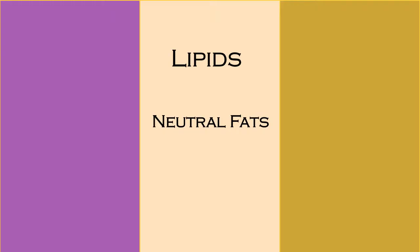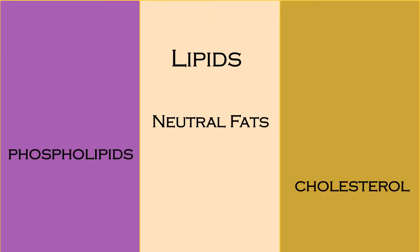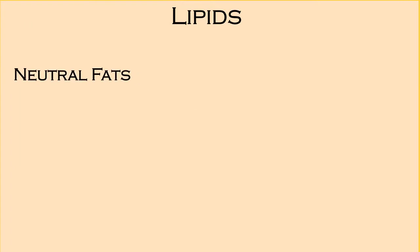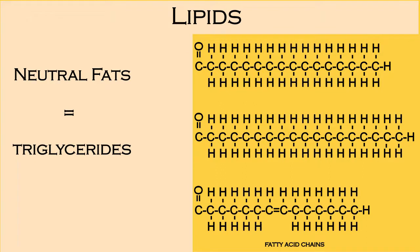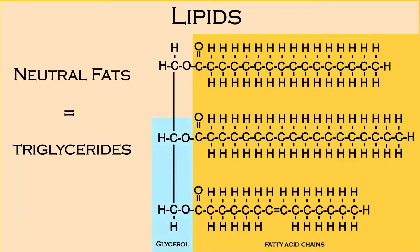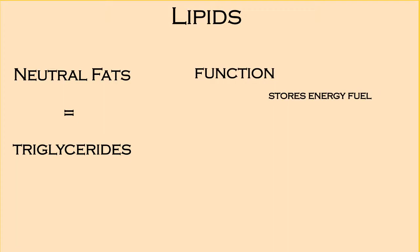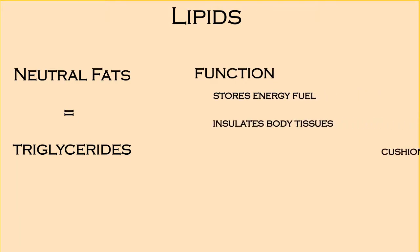Let's examine three types of lipids: neutral fats, phospholipids, and cholesterol. Neutral fats, also called triglycerides, are three fatty acid chains attached to a single glycerol molecule by dehydration synthesis. The fatty acid chains are the building blocks. While these chains can differ in length, each one has an even number of carbon molecules. Neutral fat stores energy fuel, insulates body tissues, and cushions and protects organs.